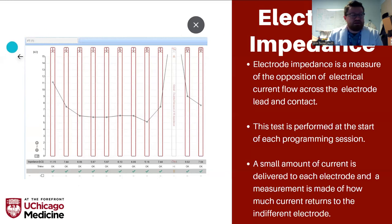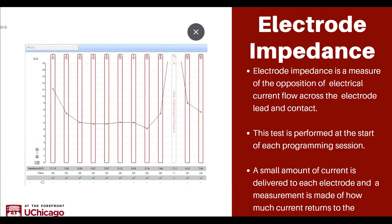Starting off, let's talk about electrode impedances. It is a measure of the opposition of electrical current flow across electrode contact points. A good way of looking at this is how well the electrodes are sitting in a fluid space. It's important to keep in mind that you can have good impedances and the electrode array not actually be in the cochlea. But when it is properly inserted, it can tell us how well that electrode contact is making its stimulation contact with the area around the basilar membrane.